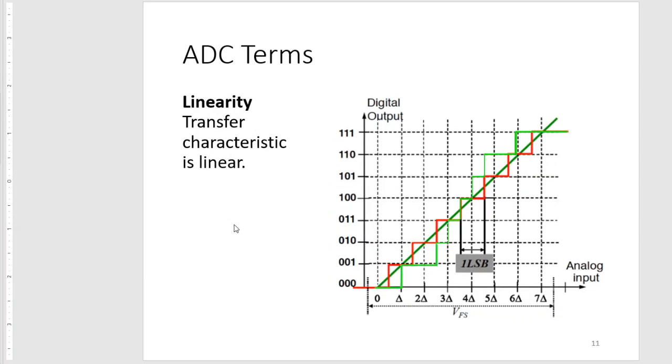Another term is linearity, which describes the transfer characteristic. Normally you would want every digital output to map to as many analog inputs as possible. If you have eight digital outputs over eight volts, you'd assume that for every volt there exists one digital output and that's evenly distributed.